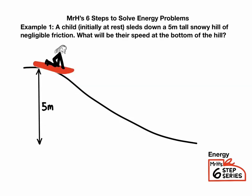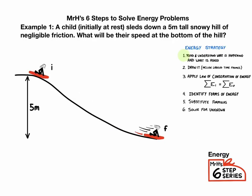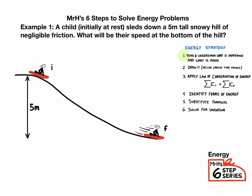Let's get started on our first problem. Say a child, initially at rest, sleds down a five-meter snowy hill with negligible friction. What would be their speed when they get to the bottom of the hill? Step one is to read and understand the question. We are done with step one when we can write a symbol for final velocity and a question mark.